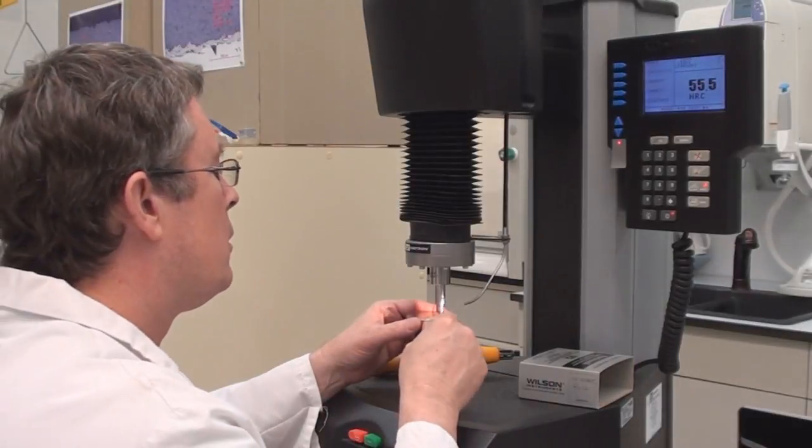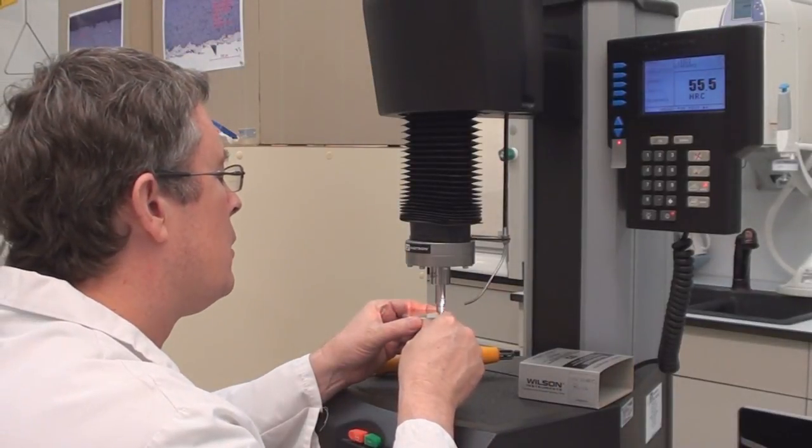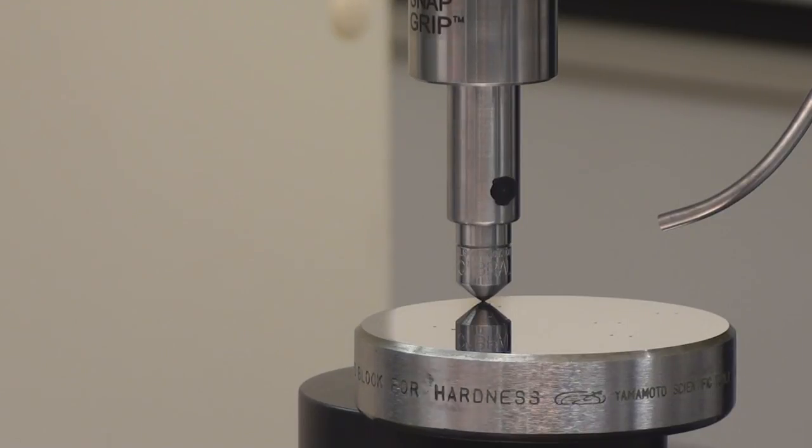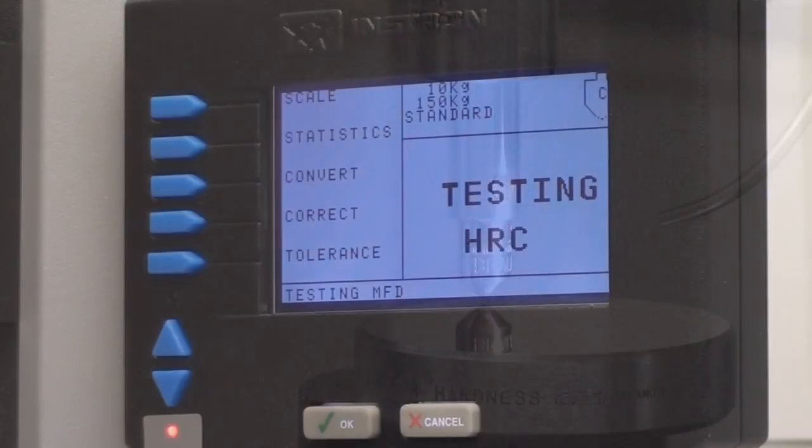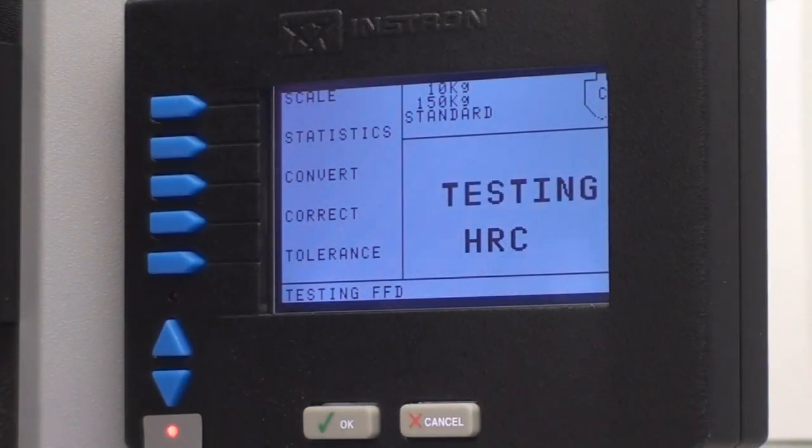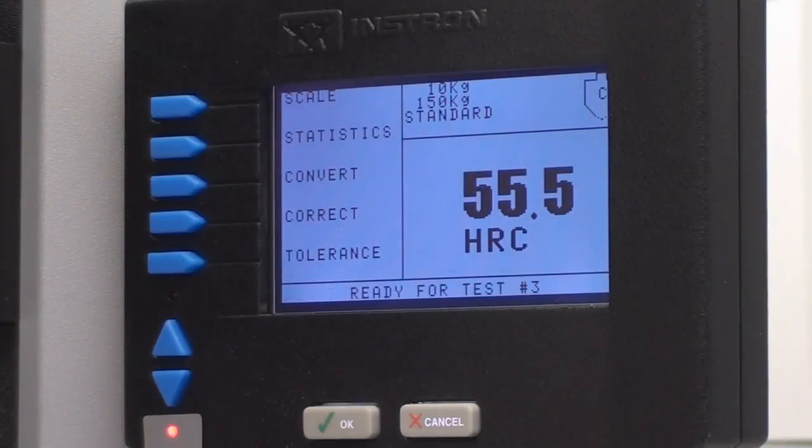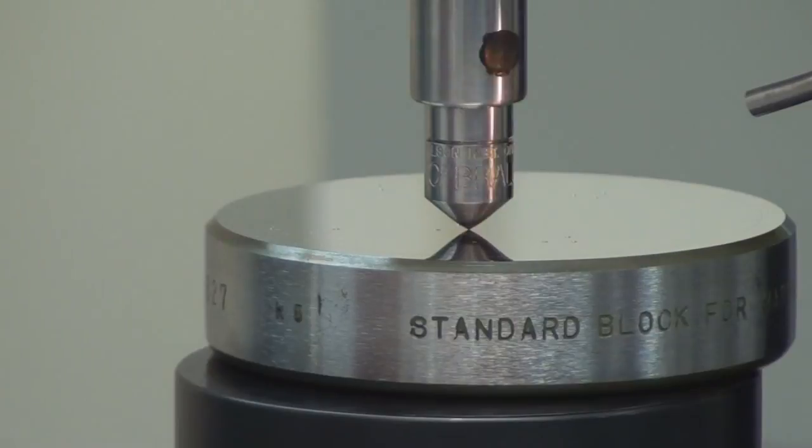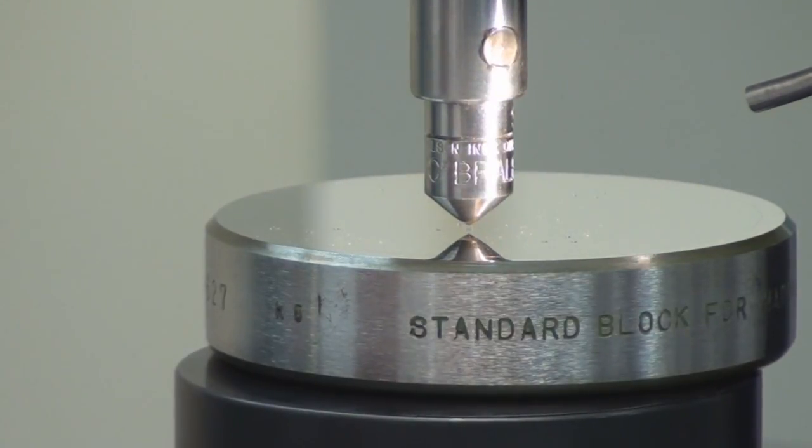The Rockwell hardness test is an indentation hardness test that can provide useful information about substrate materials prior to coating. Here, the Rockwell C hardness value is determined by the depth of penetration of the indenter. The hardness of the substrate is typically customer-driven and should be strong enough to perform its intended purpose. The coating is then applied on top of and is supported by the substrate.